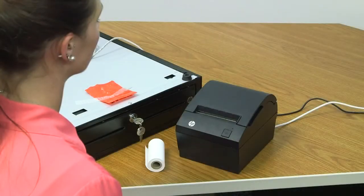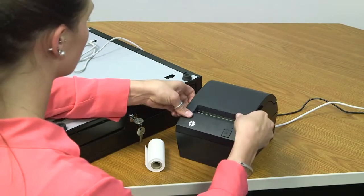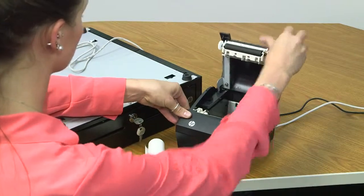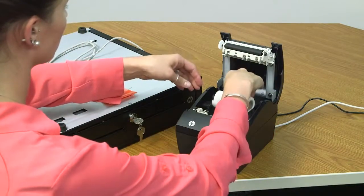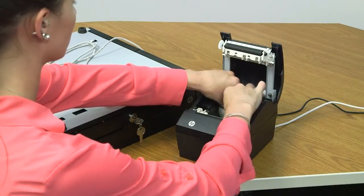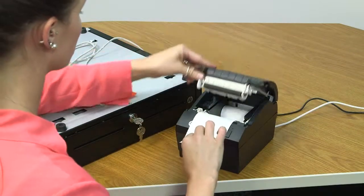To insert the starter receipt paper roll, open the top of the printer and place the roll inside, with a short length of paper extended. Close the printer.